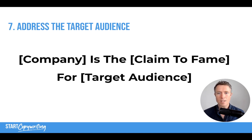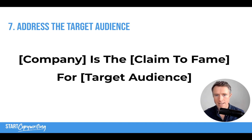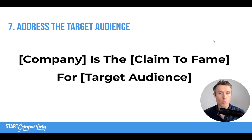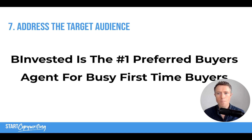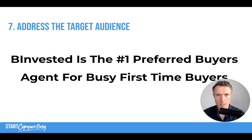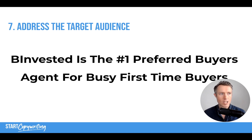Number seven is to address the target audience directly — we're trying to get their attention, not the whole world's. The template is: '[Company name] is the [claim to fame] for [target audience].' Claim to fame meaning the one thing that makes them stand out or unique in the marketplace. For example: 'Be Invested is the number one preferred buyer's agent for busy first-time buyers.' You can add clarity by specifying first-time property investors or first-time home buyers, if that's the category your client leads in.